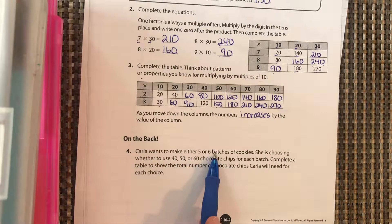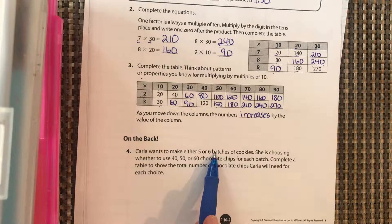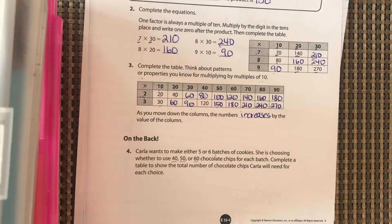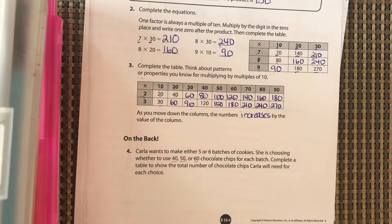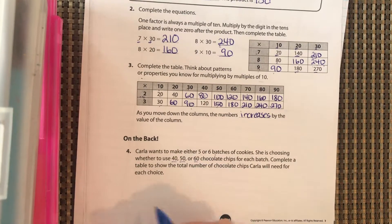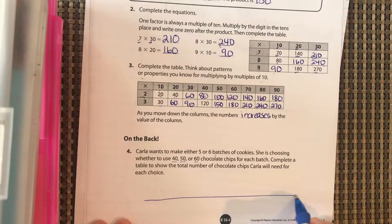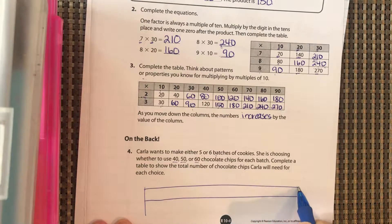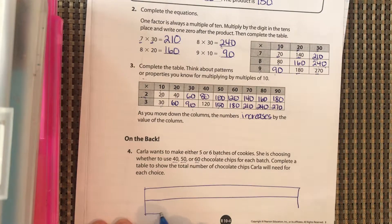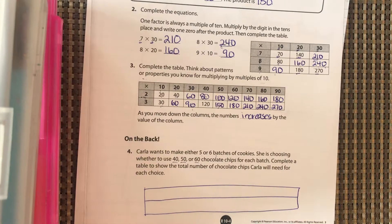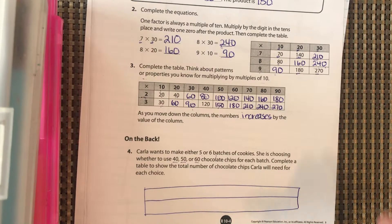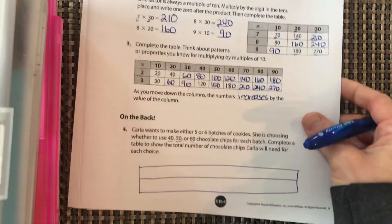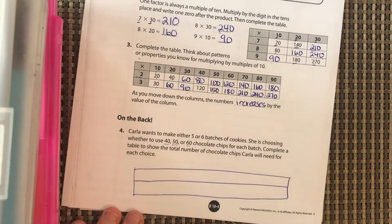Carla wants to make either five or six batches of cookies. She is choosing whether to use 40, 50, or 60 chocolate chips for each batch. Complete a table to show the total number of chocolate chips Carla will need for each choice. All right, so we're going to draw a big box around this. Go ahead and draw that. Let me pause it and draw that. Okay, if you're not done, pause it and then come right back.